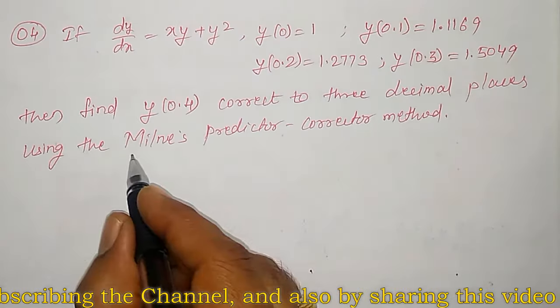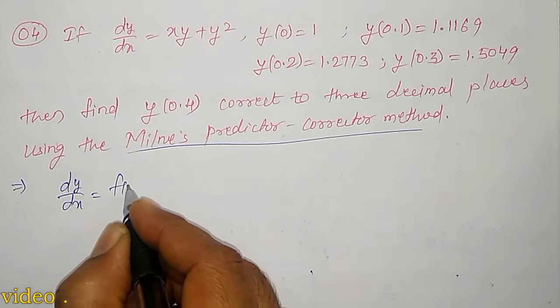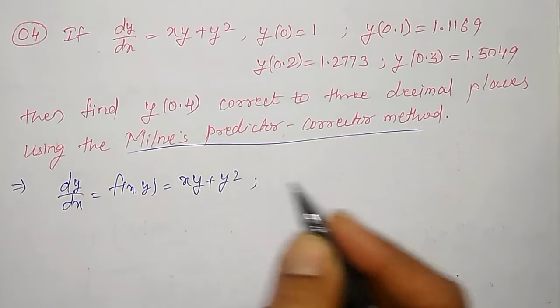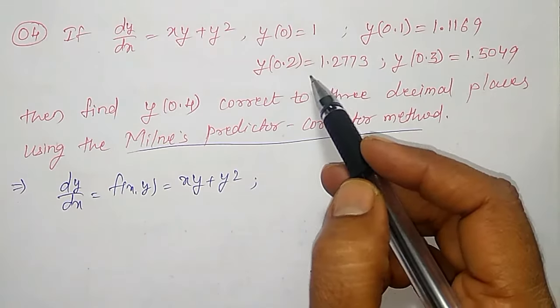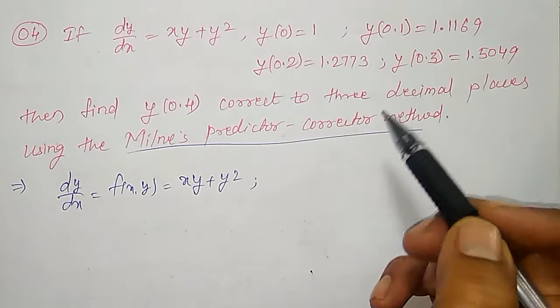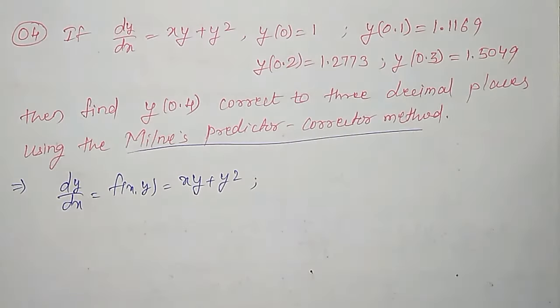So before starting with Milne's predictor-corrector method, let me list out what the given function f(x,y) is. That is, dy/dx equal to f(x,y), that is xy plus y squared. The initial values are given: x0, x1, x2, x3 and corresponding y values y0, y1, y2, y3 are given. I will make a table, and in that table, in Milne's predictor method, f1, f2, f3, f4 I want.